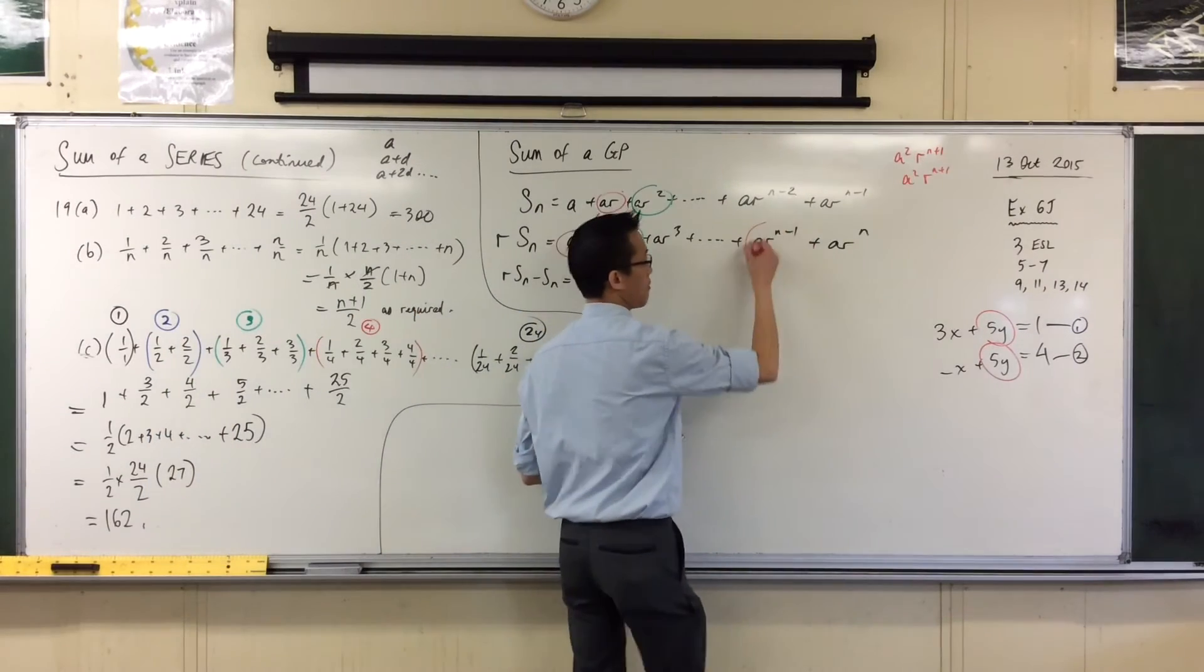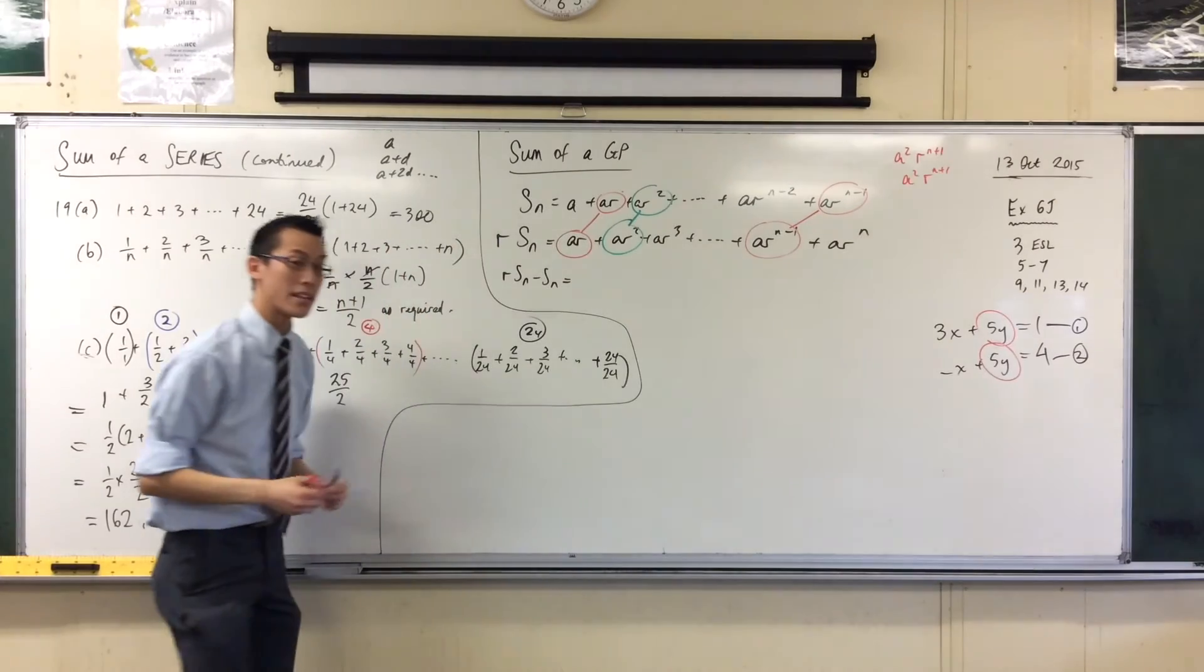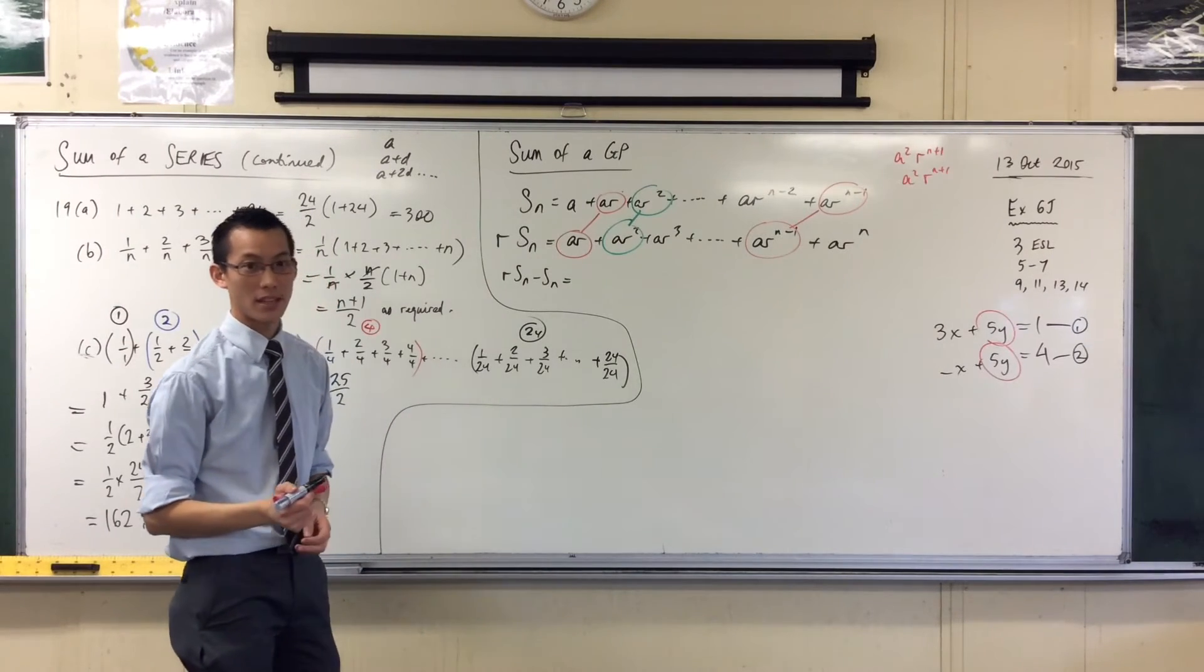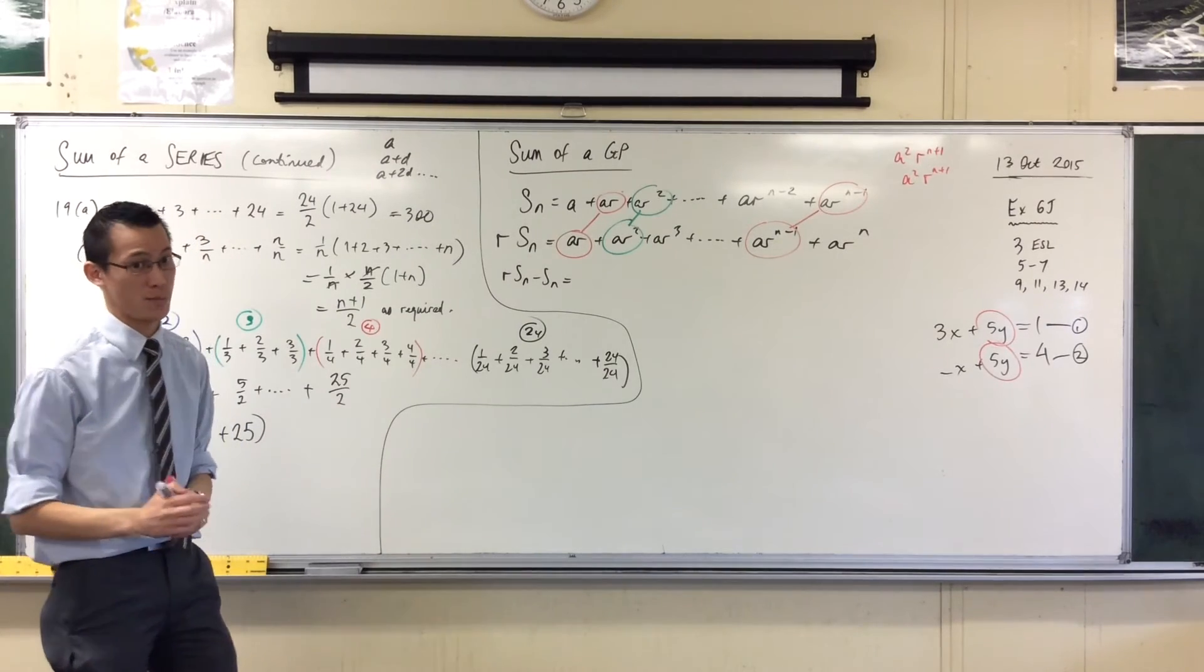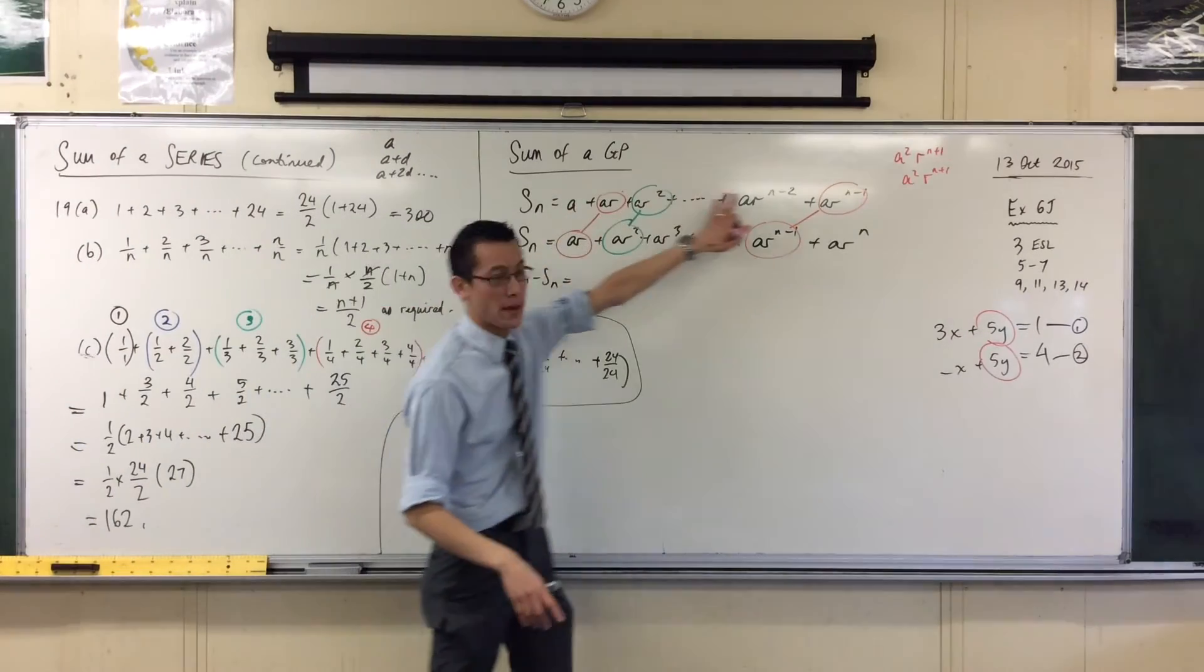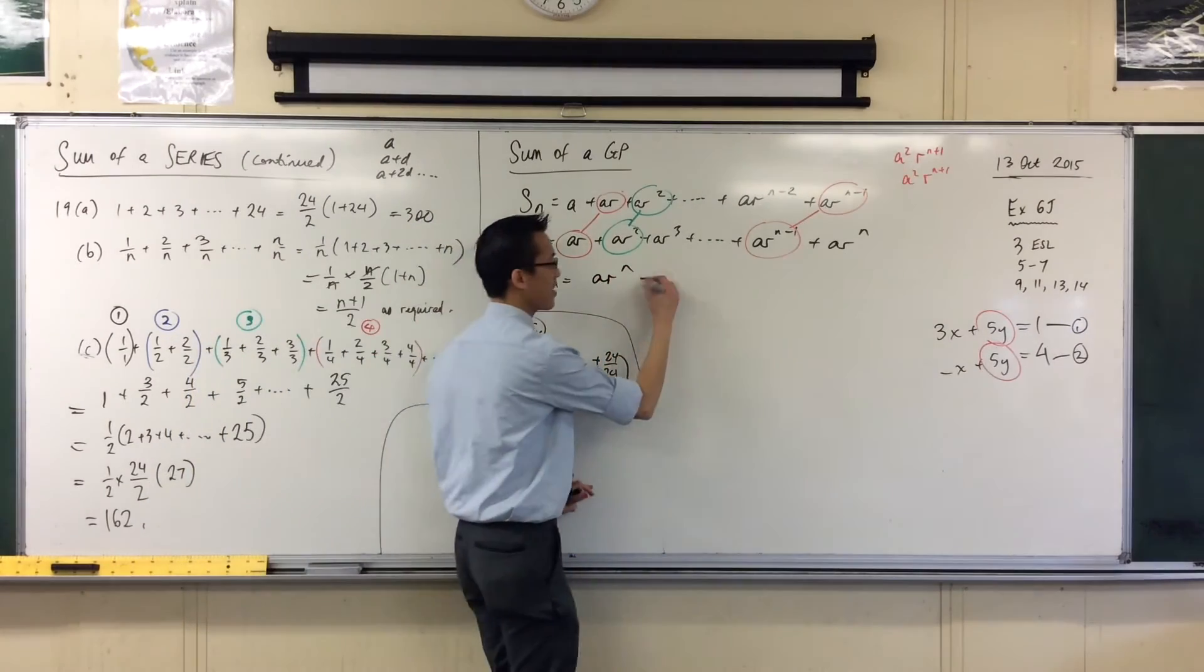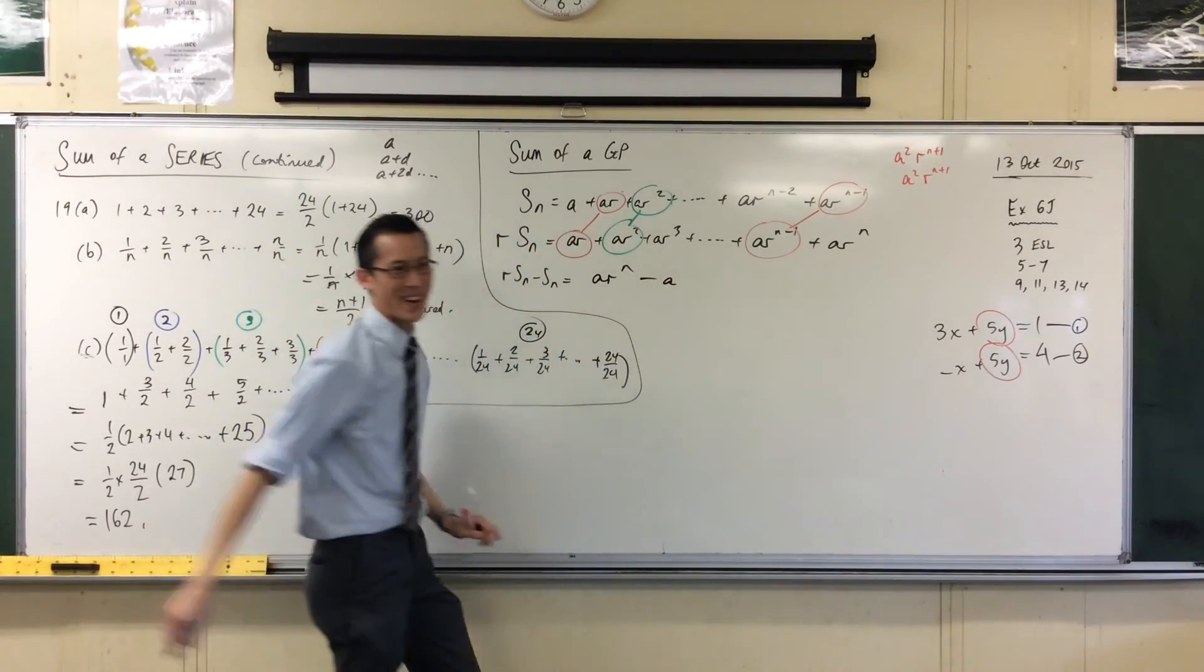I've already got the first term in common there. What is the final term that's in common between them? Good. It's the last term in the first one and it's the second last one in the second one. Therefore, since all of these guys I've paired up vanish away, I get left with AR to the N take away this lone survivor up here. That's all that's left behind.